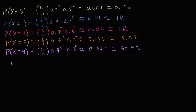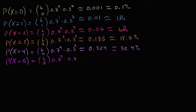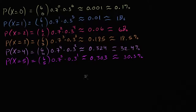The probability that our random variable is equal to five is going to be six choose five, times 0.7 to the fifth power, times 0.3 to the first power, and that is going to be roughly 0.303, which is 30.3%. That's interesting — one more left.